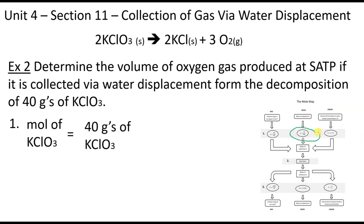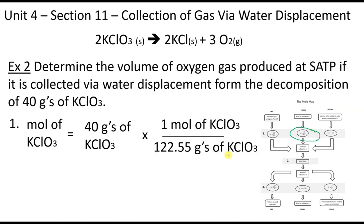In step one, we find the moles of KClO3 from 40 grams. Setting up the expression with the molar mass of 122.5 g/mol, we cancel out grams, giving us 40 divided by 122.5 = 0.326 moles. We've arrived at the moles of substance A and now move to step two: applying the mole ratio to get the moles of substance B.